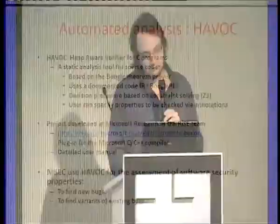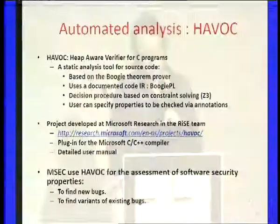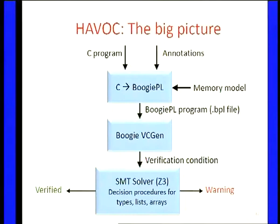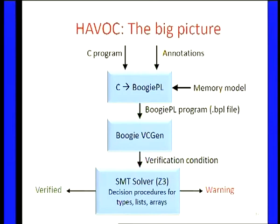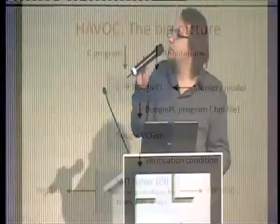Here's a quick picture of the tool. You have the translator from C to Boogie PL — PL stands for programming language, which is the intermediate form of Boogie. We give the translator the program, annotations, and also the memory model. The memory model is basically a set of axioms that make explicit how the program reads and updates memory. Depending on the architecture — for example, ARM with its weak memory model versus Intel — you might want different axioms. Once we have all that information, we take the Boogie program, which is a BPL file, and pass it to Boogie.